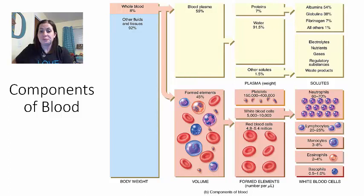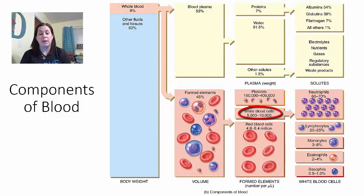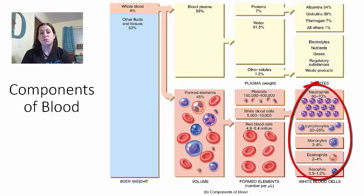The formed elements—the actual cells—make up approximately 45% of the blood. Breaking this down: platelets number between 150,000 and 400,000 at any given time; white blood cells number between 5,000 and 10,000—these numbers can go up or down depending on disorders or problems. There are different types of white blood cells: neutrophils (the largest group), lymphocytes, monocytes, eosinophils, and basophils.